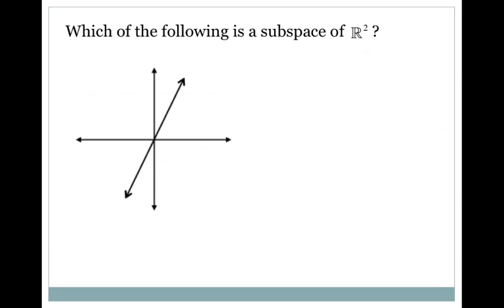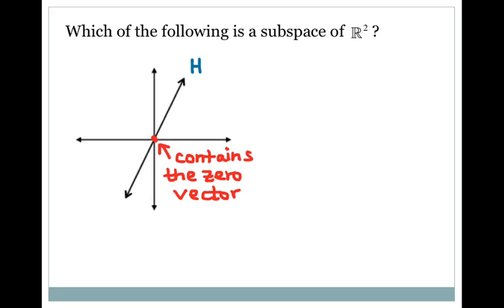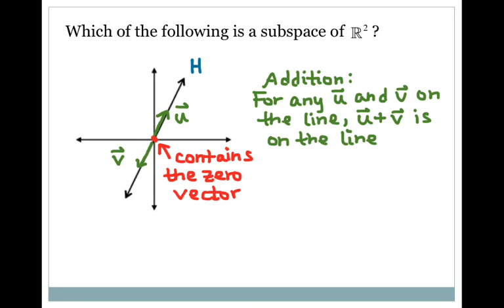Let's look at another one. We have this line in R2. Let's check for the zero vector first. The zero vector is on the line, so that criteria is met — the zero vector is in H. Now let's check addition. For any two arbitrary vectors u and v on the line, u plus v is also going to be on the line because they have the same slope. So H is closed under addition, and the second criteria is met.